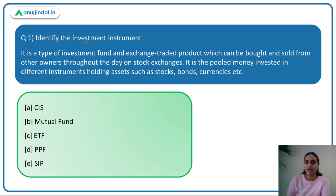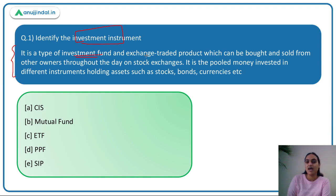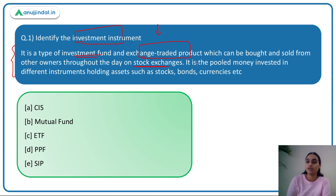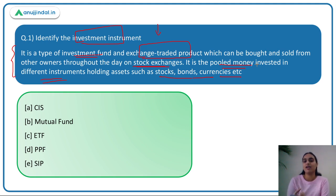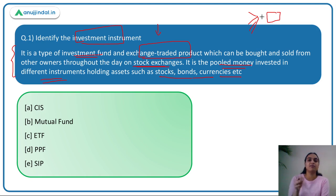The first question says: identify the investment instrument. It's a type of investment fund — an exchange traded product. It is an investment fund that is traded on the exchange, so it can be bought and sold from other owners throughout the day on the stock exchanges. It is also pooled money invested in different instruments, holding assets like stocks, bonds, currencies, etc.